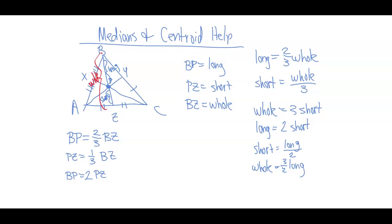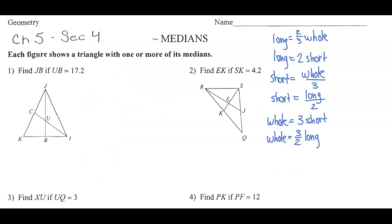You have to look at what you're given, which is exactly what we're going to look at in this next part. Taking a look here, this is asking us to find JB, which is the whole. If UB, UB is the short. We have to look to see what from our list deals with finding the whole dealing with the short. And if you notice, that is this one. Sorry, I'm incorrect here. The whole is this one. So, JB will equal three times UB. JB equals three times 17.2 and 17.2 times three is 51.6.